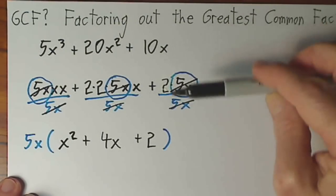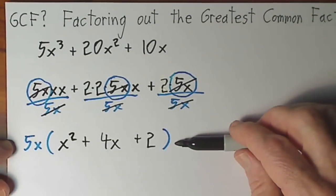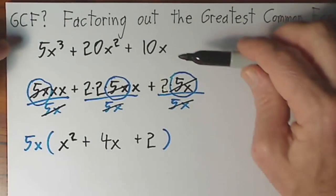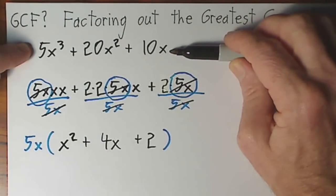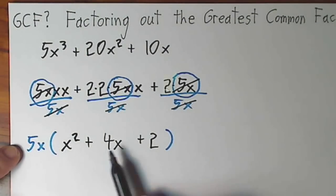So we don't usually go through this much trouble, but what we have written on this line is the same value as what we started with. But down here, we've cleaned it up some because we removed a 5x from each term.